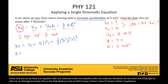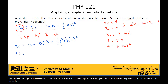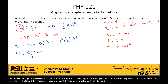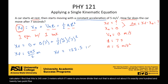Let's solve it: xf equals zero plus zero times seven, plus one-half times five times seven squared. Throwing that into the calculator gives 245 over 2 meters, which is exactly 122.5 meters. That is how far the car has traveled after seven seconds.